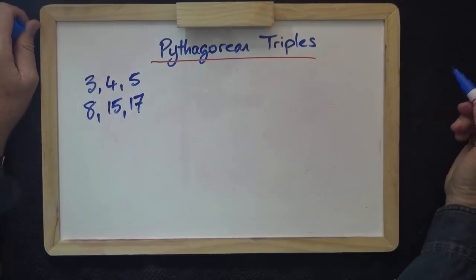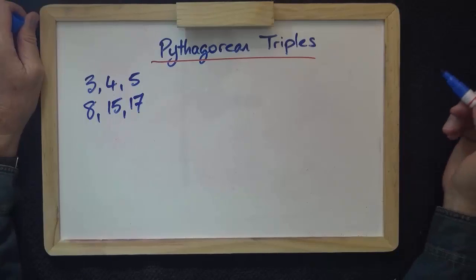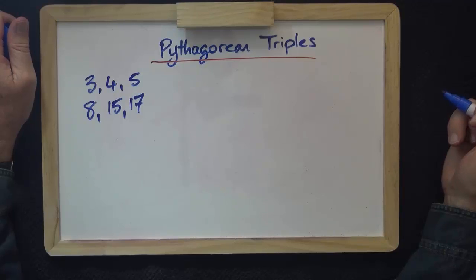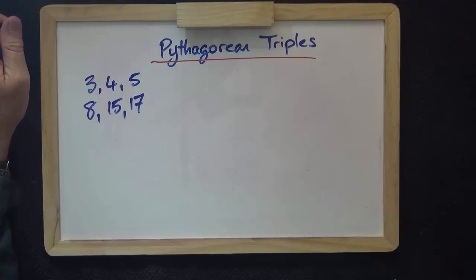Pythagoras found that he could turn any odd number into a Pythagorean triple. Pythagoras did this by squaring the number, then halving that number, and taking the two whole numbers either side of it.